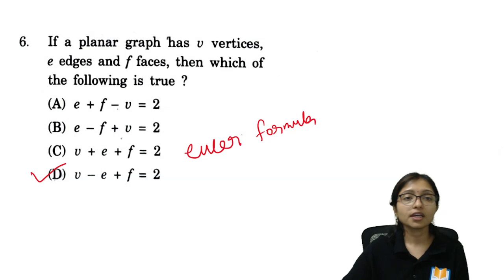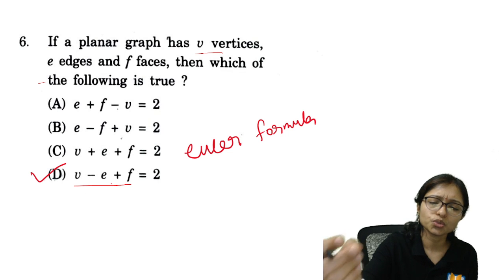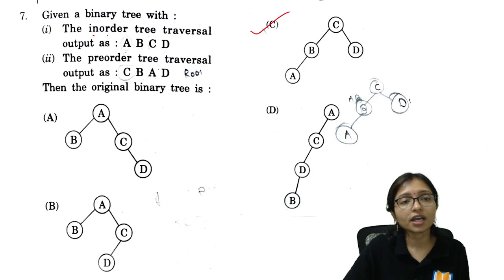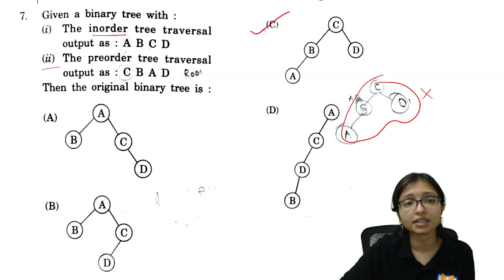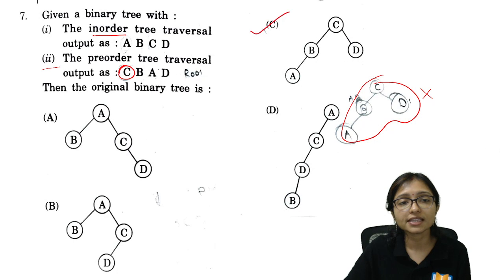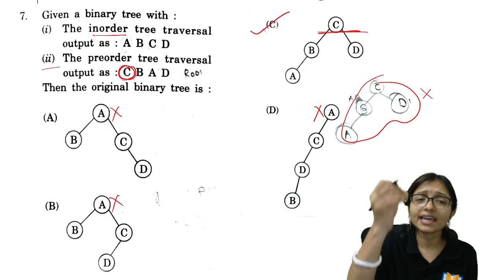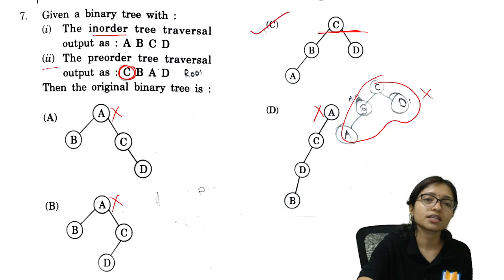Next: for a planar graph with V vertices and E edges, the formula is V − E + F = 2. That's a very easy, quickly solvable question. Next: when in-order and pre-order traversals are given, don't waste time drawing the tree. From the pre-order, you can identify the root and eliminate wrong options. By elimination, you can quickly get the correct answer.